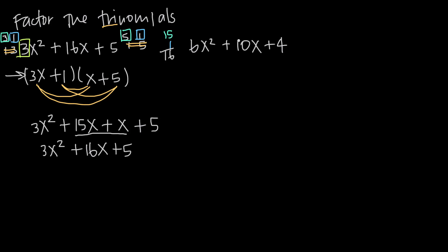Now let's look at another example: 6x squared plus 10x plus 4. There are actually 3 ways we can factor this trinomial. The factors of 6 are 6 and 1, or 3 and 2. The factors of 4 are 4 and 1, or 2 and 2. We need to figure out how to combine these factors to reach the middle number, 10. If we take 6 and 1 with 4 and 1, multiplying 6 by 4 gives 24 and 1 times 1 gives 1 — no way to reach 10. But if we pair 6 with 1 and 1 with 4, we get 6 and 4, which could possibly get us to 10.